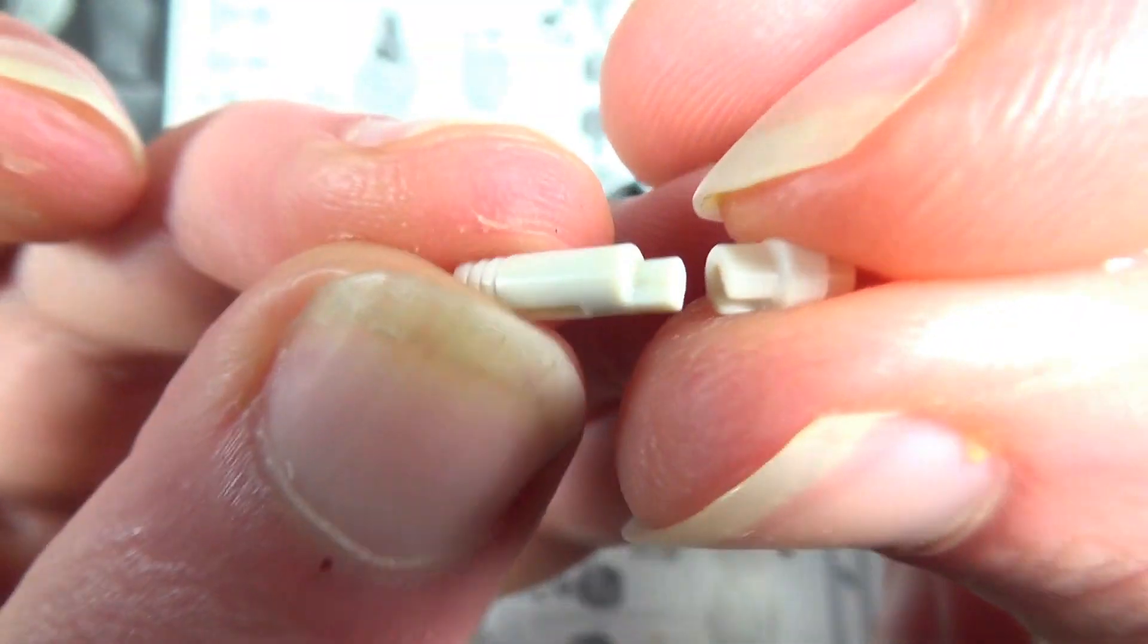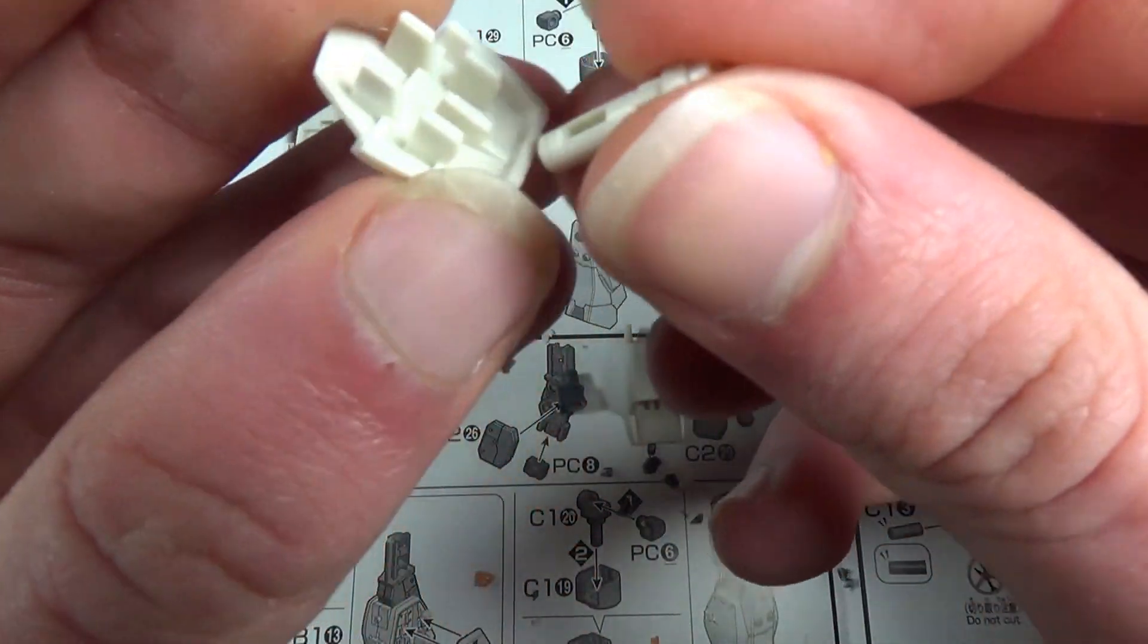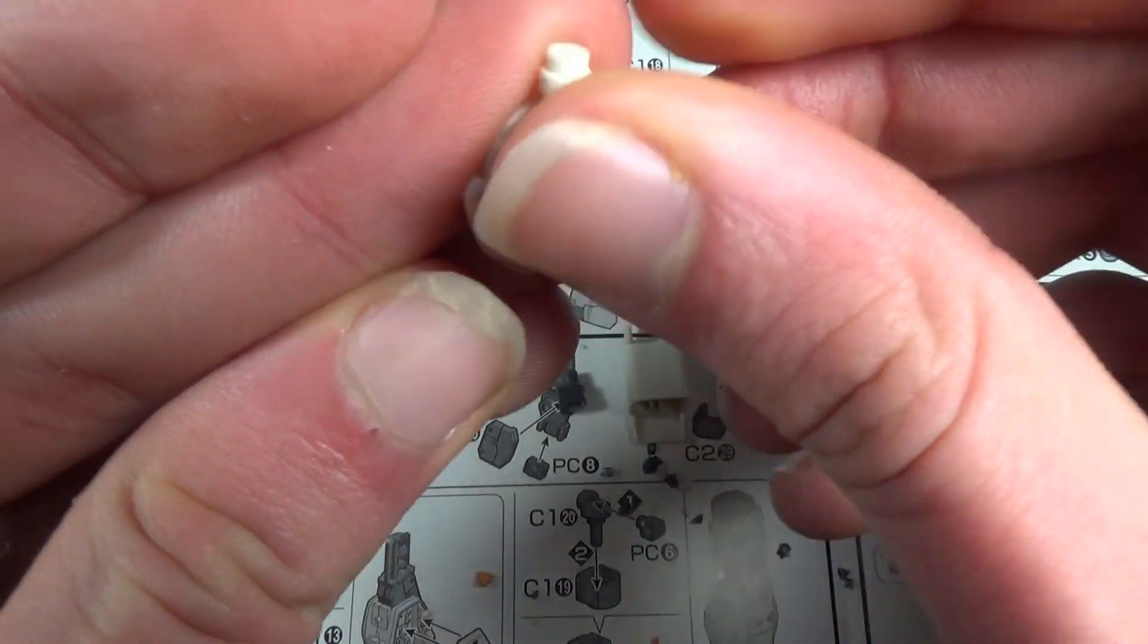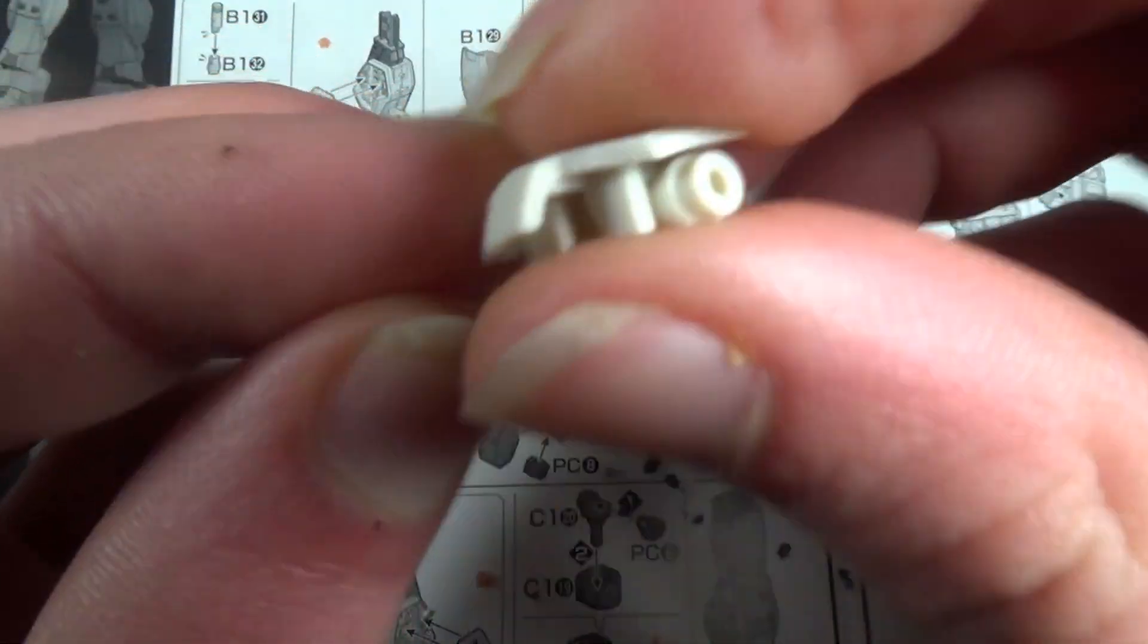And we're going to take a quick pause from building the leg to put together a beam saber, so that we can take that beam saber and attach it to the inside of this leg armor piece right here. Yeah, it just tabs in right here.